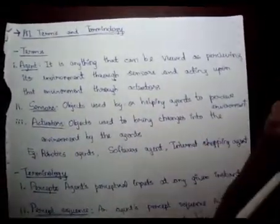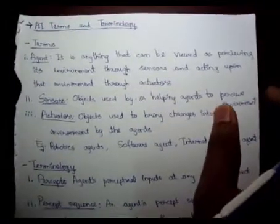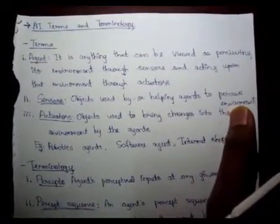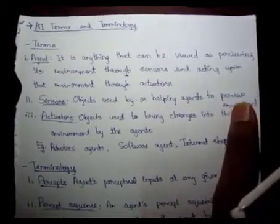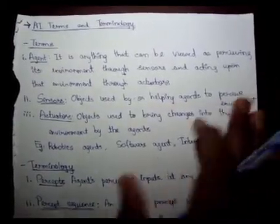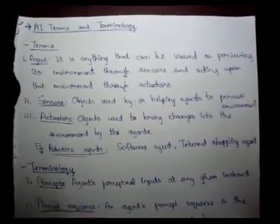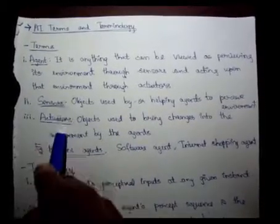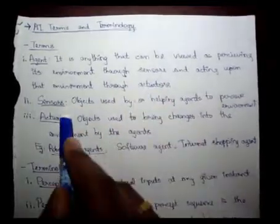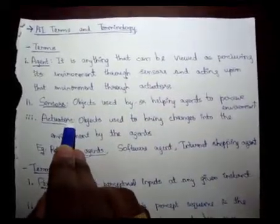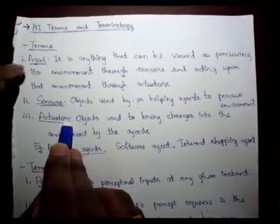Let me explain some examples so that you can understand the concept clearly. I'll first explain about a robotics agent example. Before that, I'll tell about the sensors and actuators. Sensors and actuators are objects which interact with the agent.